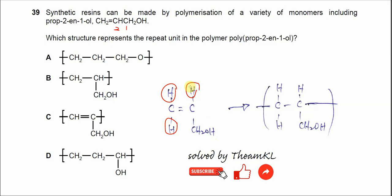The prop-2-en-1-ol double bond will open up. The pi bond breaks, forming tails here. Eventually it forms this polymer chain.